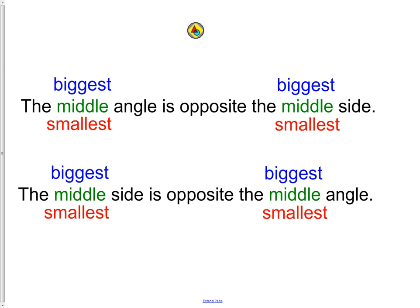Here's a little statement. Actually, three little statements. The biggest angle is opposite the biggest side. Notice the blue words go together. We have the biggest angle is opposite the biggest side. Then we can make this statement again. The middle angle is opposite the middle side. And lastly, the smallest angle is opposite the smallest side.